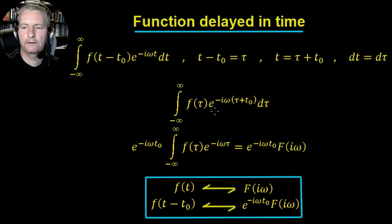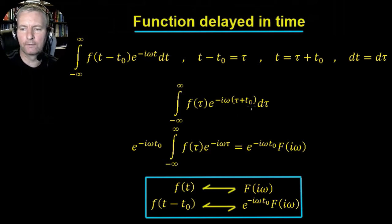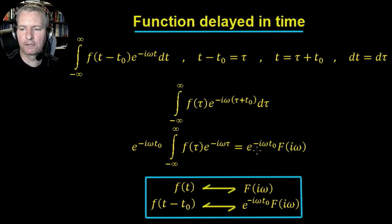Substituting these in, we get f(tau) · e to the minus i·omega·(tau + t0) d·tau. We can take out the factor e to the minus i·omega·t0, and we're left with f(tau) · e to the minus i·omega·tau d·tau. This is e to the minus i·omega·t0 multiplied by the quantity which is nothing other than the Fourier transform F(i·omega).